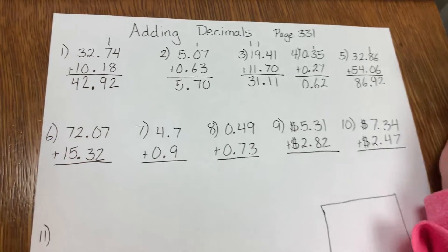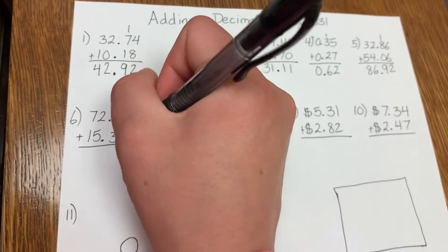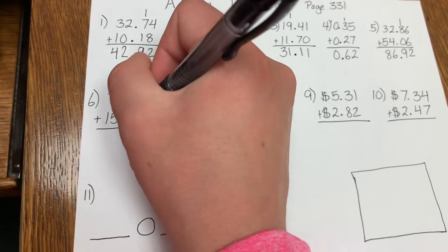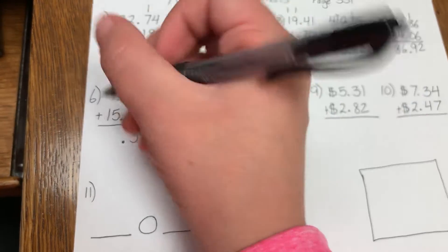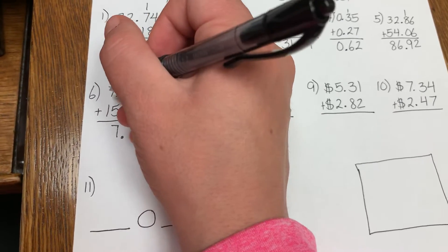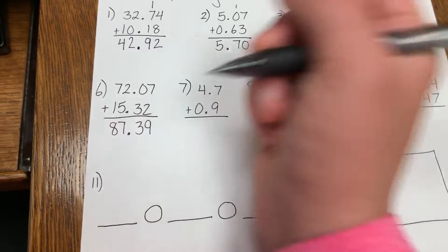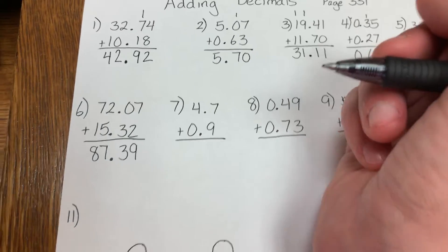On number 6: 7 plus 2 is 9. 0 plus 3 is 3. Bring down the decimal. 2 plus 5 is 7. And 7 plus 1 is 8, for an answer of 87 and 39 hundredths.